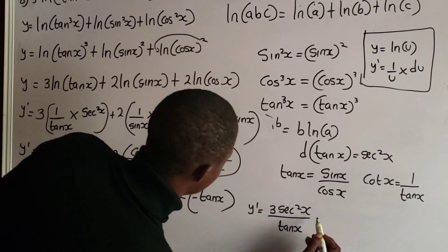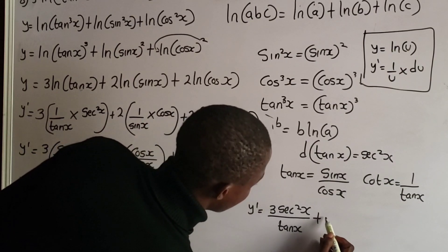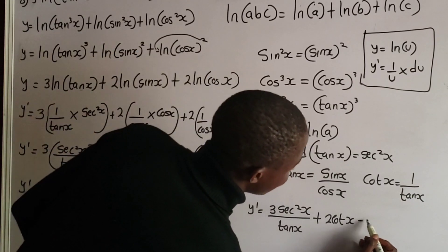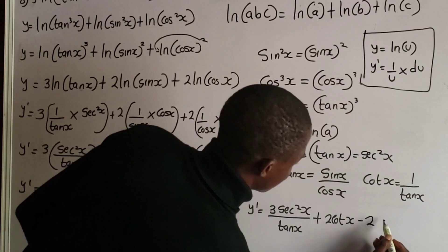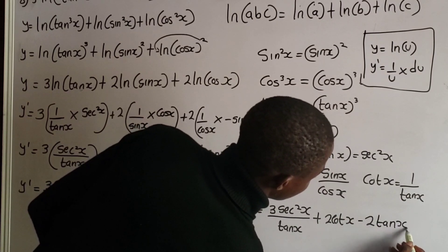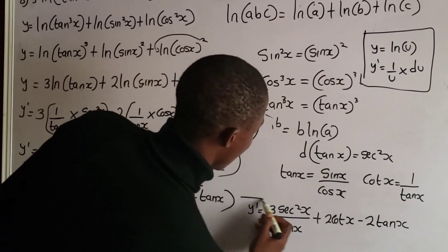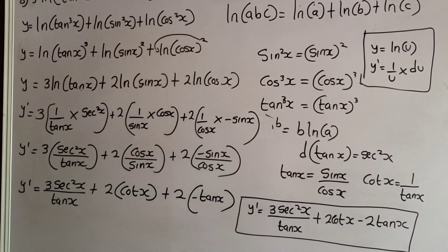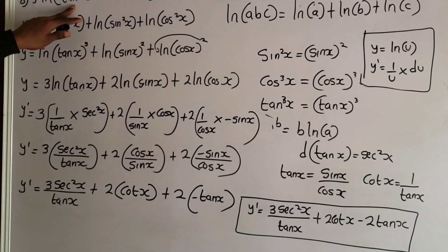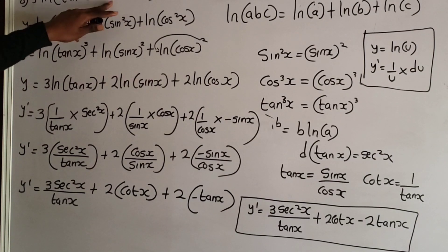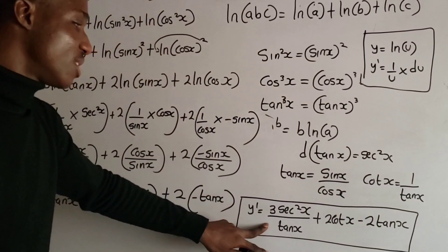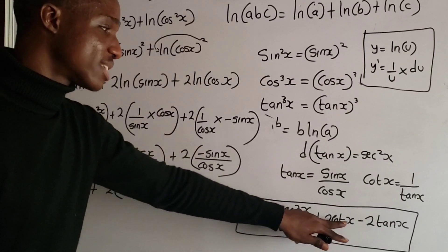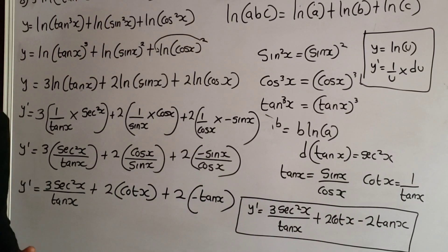So the derivative of y is equal to 3 sec²x over tan x, plus 2 cot x, minus 2 tan x.